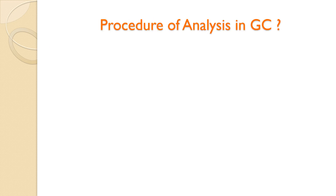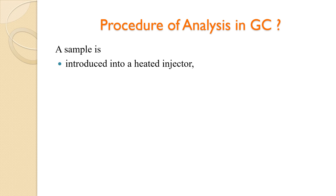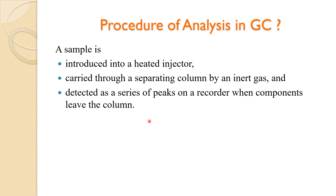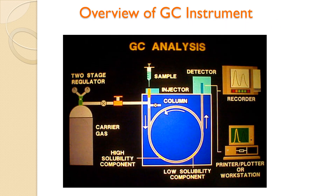In the GC procedure, the sample is introduced into a heated injector and carried through the separating column by an inert carrier gas, which serves as the mobile phase. Components are detected as a series of peaks on the recorder when they leave the column. You can see in the instrumentation diagram that the carrier gas is in a tank with regulators, which carry the mobile phase into the column, where the sample is injected and then detected and recorded.